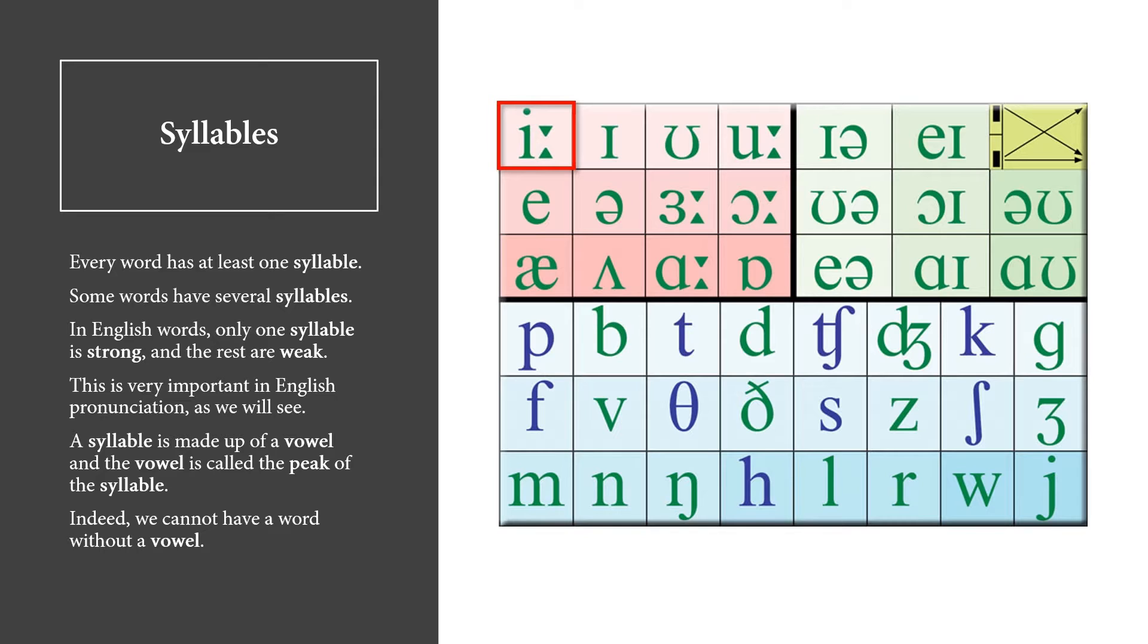This is very important in English pronunciation, as we will see. A syllable is made up of a vowel, and the vowel is called the peak of the syllable. Indeed, we cannot have a word without a vowel.